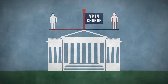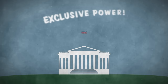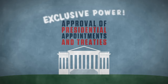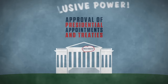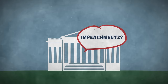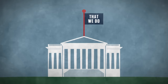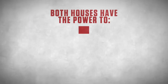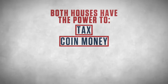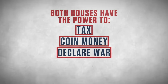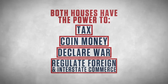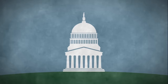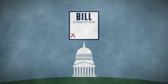The Senate exclusively has the power to approve presidential appointments and treaties. And when the House moves to impeach a government official, it's the Senate that tries them. Together, both houses have the power to tax, coin money, declare war, and regulate foreign and interstate commerce. But Congress's bread and butter is writing and passing bills.